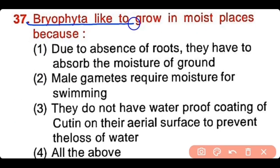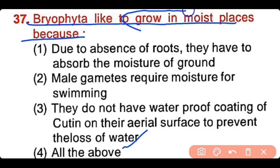Question number 37: Bryophyta prefer to grow in moist places because — due to absence of roots they have to absorb moisture from the ground, male gametes require moisture for swimming, they do not have a waterproof coating of cutin on their aerial surface to prevent water loss, or all of the above. The correct answer is option 4. All these characters are true about bryophytes, which is why they grow in moist places.